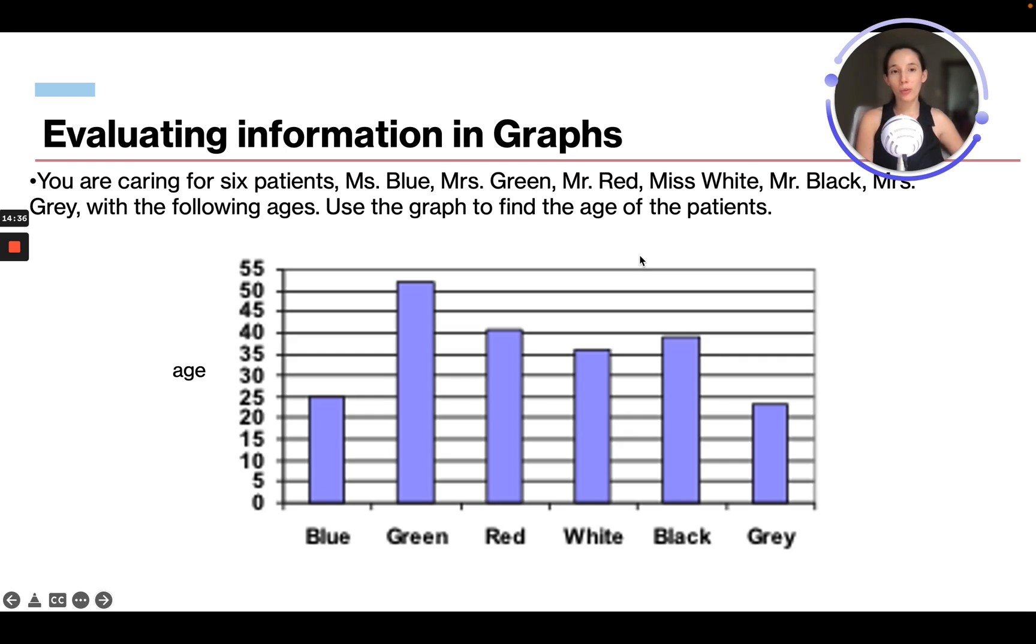So if we look at this graph, we have a bar graph, and this is an example of a problem that you will see on the TEAS. They'll give you a bar graph and ask you to interpret the data from it. You're caring for six patients: Miss Blue, Miss Green, Mr. Red, Miss White, Mr. Black, and Miss Gray. With the following ages, use the graph to find the ages of the patients. So we can see Miss Blue is 25 years old.